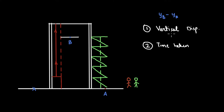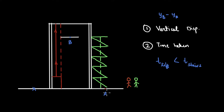Now let's look at the second calculation: time taken. Assuming this is not a particularly slow lift, the time taken by the lift will be less than the time taken by the stairs. Both you and your friend started from the same initial position and went to the same final position, but the time taken was different because you took different paths. So time is dependent on the path taken from A to B.